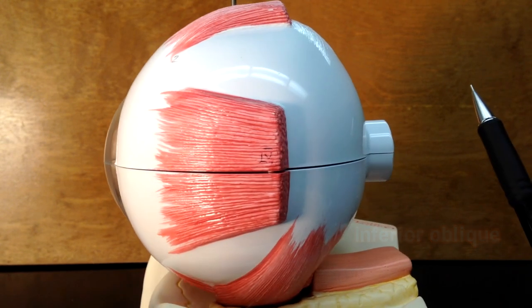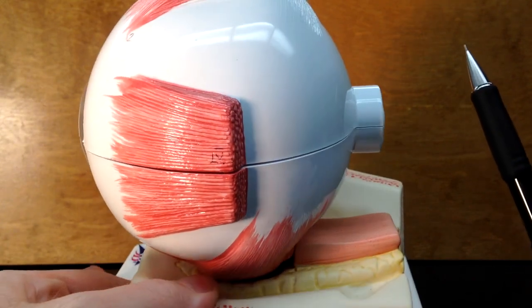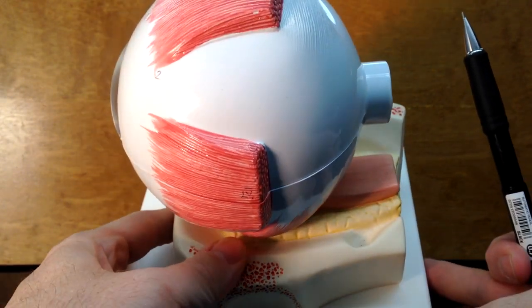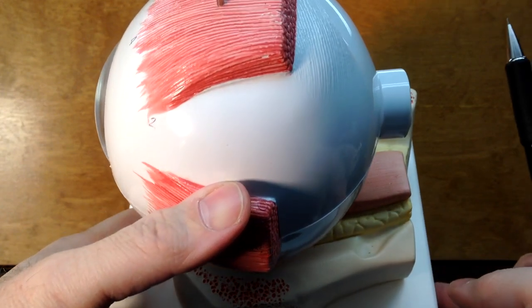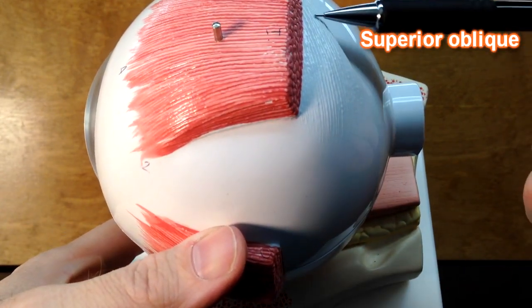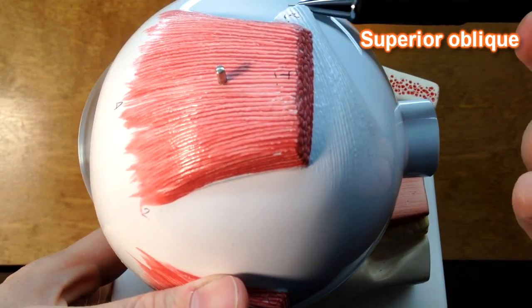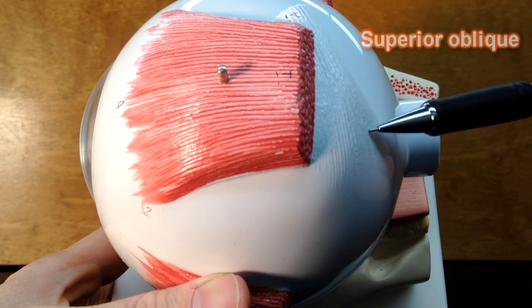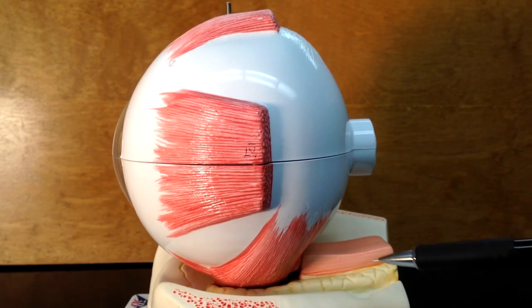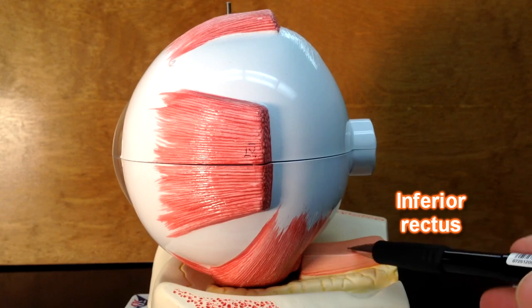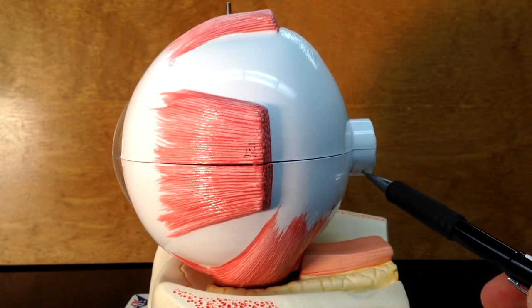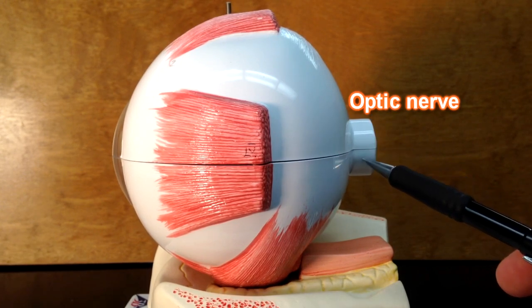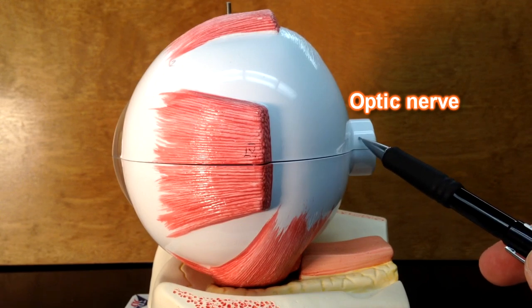Superior oblique we would be able to see on the top if I were to turn the model like so and show you the tendon right here of superior oblique. We can also see inferior rectus right here. And then this structure right here, this is going to be the optic nerve where it exits the back of the eye.